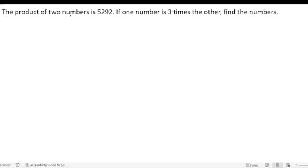The product of two numbers is 5292. There are two numbers and the product of the two numbers is 5292. If one number is three times the other, find the numbers. So one of the numbers is three times the other one. We don't know the two numbers, so we have to take one of the numbers.